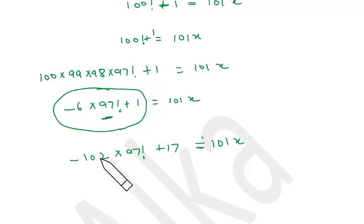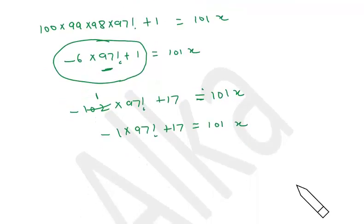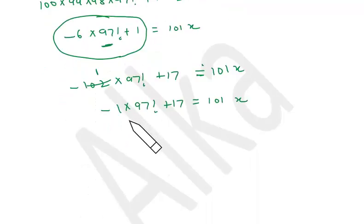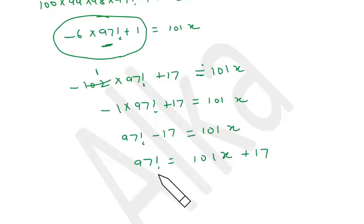Now further, I can reduce 102. So here it will be 1 only. So minus 1 into 97 factorial plus 17, still it is a multiple of 101. Now I want this term to be positive. So if I multiply this entire expression by minus 1, it will still be a multiple of 101, because if you multiply this expression by any integer, it will still be divisible by 101. We are not worried about the quotient. So 97 factorial minus 17 is also divisible by 101. So 97 factorial is basically 101x plus 17.